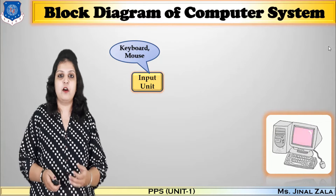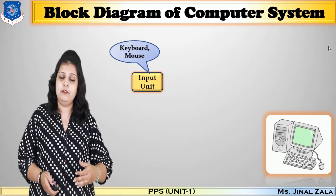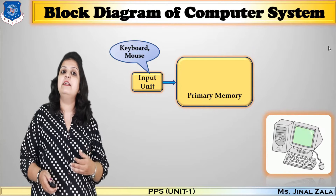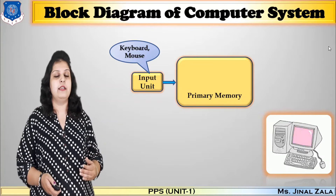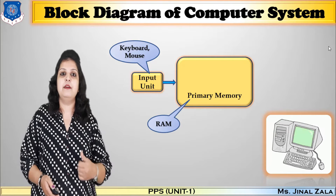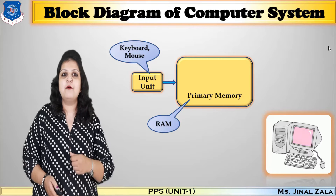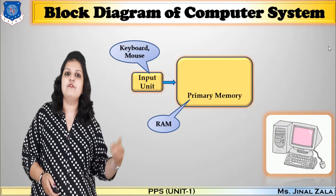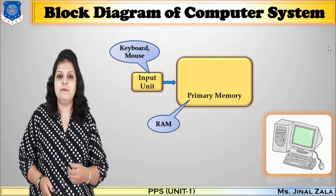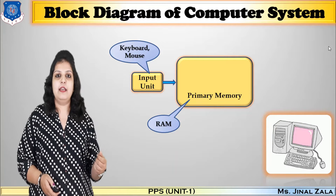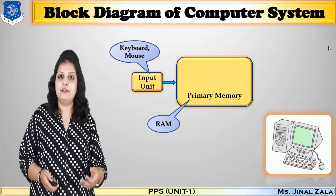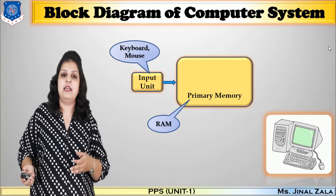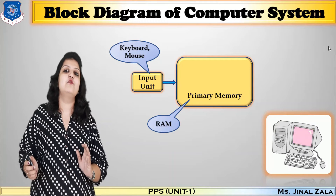Suppose you have opened a document file. This particular file is currently open in our primary memory, because memory is divided into two parts: primary and secondary. Primary memory is also called RAM — random access memory. It is also called temporary memory or volatile memory. If you switch off the computer and your file is not saved, then it is lost permanently. But if you store the data in secondary memory, it will be stored permanently.